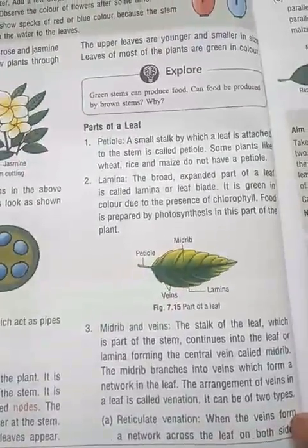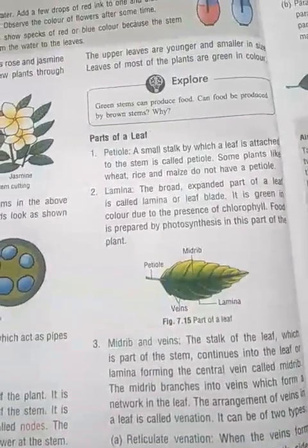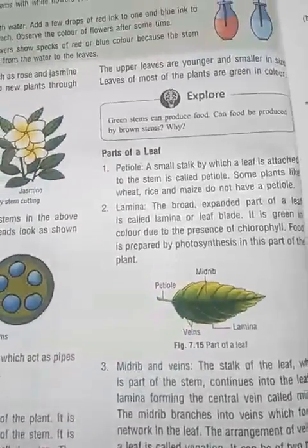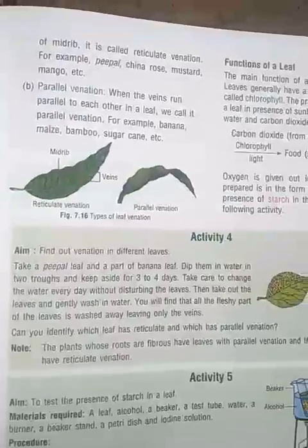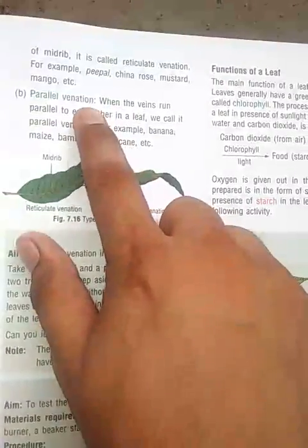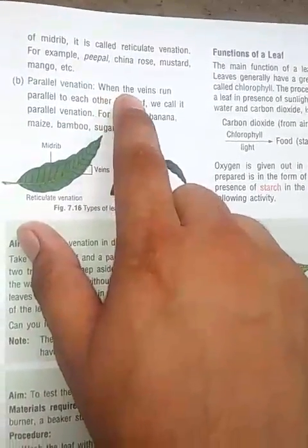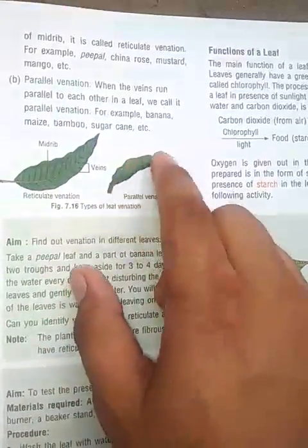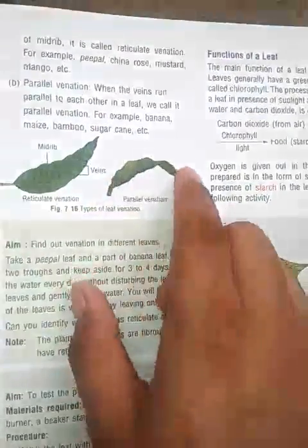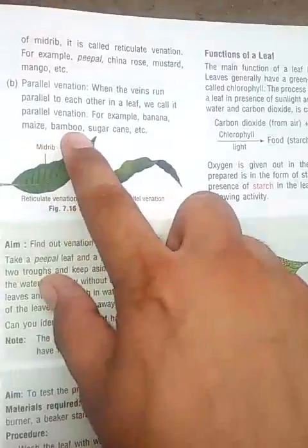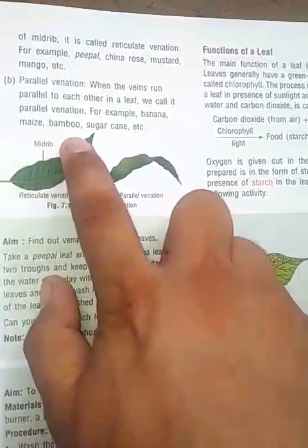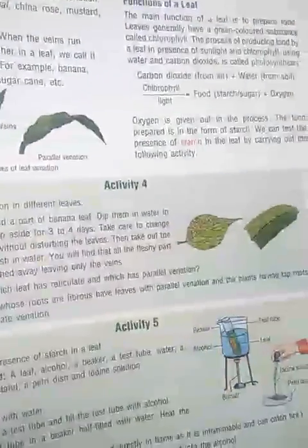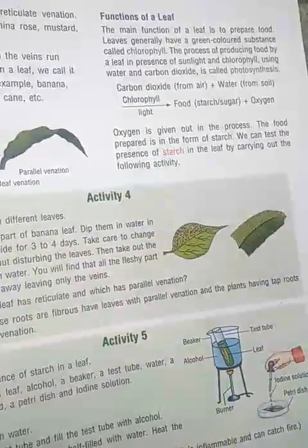When the veins form a network across the leaf on both sides, it is known as reticulate venation. Examples include peepal, China rose, and mustard. When the veins run parallel to each other, it is called parallel venation. Examples include banana, maize, bamboo, and sugarcane.